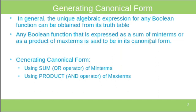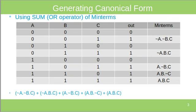If we have the sum of minterms or product of maxterms, that boolean function is said to be in canonical form. We can generate the canonical form in two ways: using the sum (OR operator) of minterms, or using the product (AND operator) of maxterms. First, we will try using the sum or OR operator of minterms.